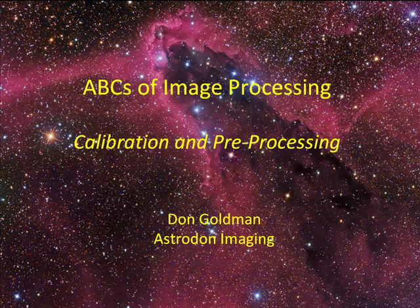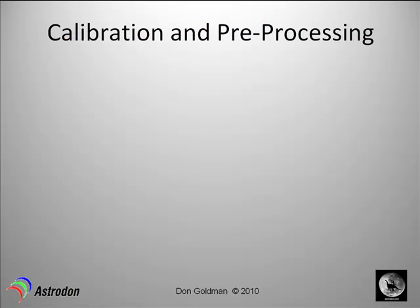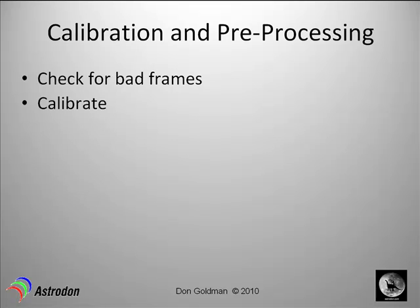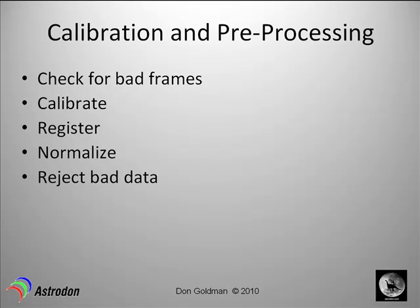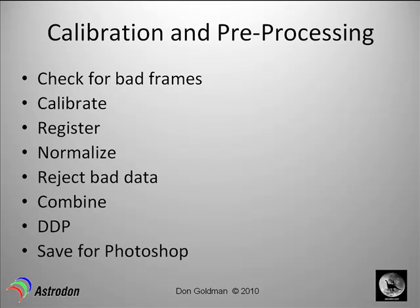This tutorial is about calibration and pre-processing of astro images. We'll be using the following procedure: check for bad frames, calibrate, register, normalize, reject bad data, combine, and do a DDP. Then we'll save for Photoshop.